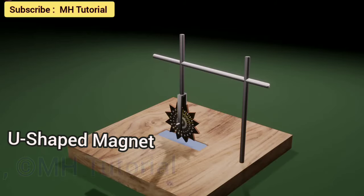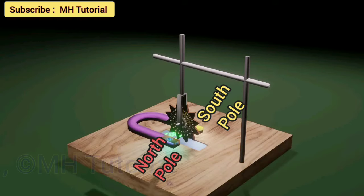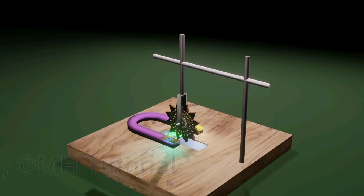A U-shaped magnet is kept on the block so that its two poles rest on either side of the hole. Magnetic field always oriented from the north pole to the south pole. These green particles are moving along the magnetic field.